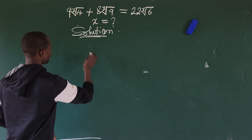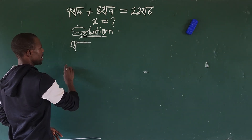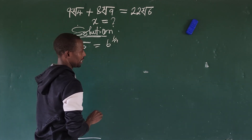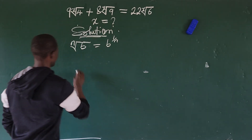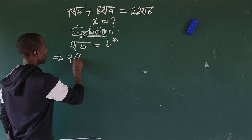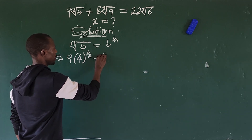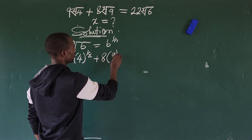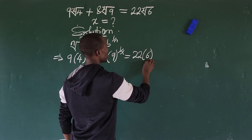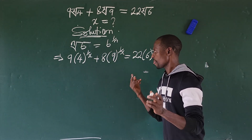What is the value of x here? We know that the n-th root of b is equal to b to the power of 1 over n. So we can rewrite the expression: 9 times 4 to the power of 1 over x, plus 8 times 9 to the power of 1 over x, equals 22 times 6 to the power of 1 over x.